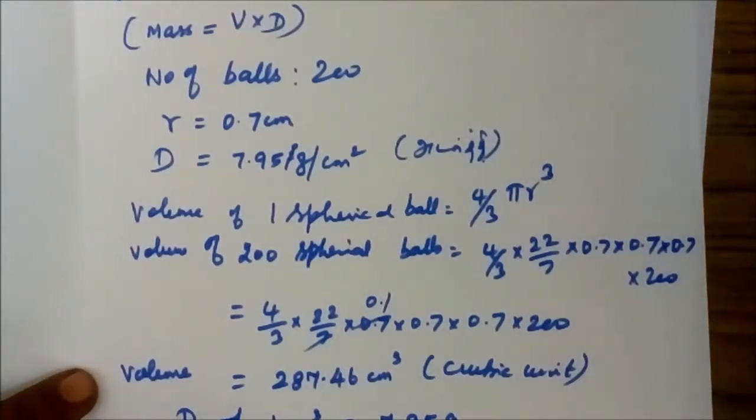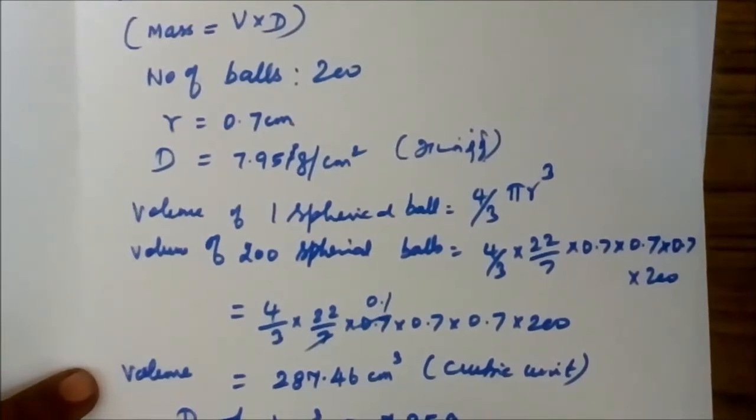Therefore, the question is the mass of 200 balls equals volume times density.